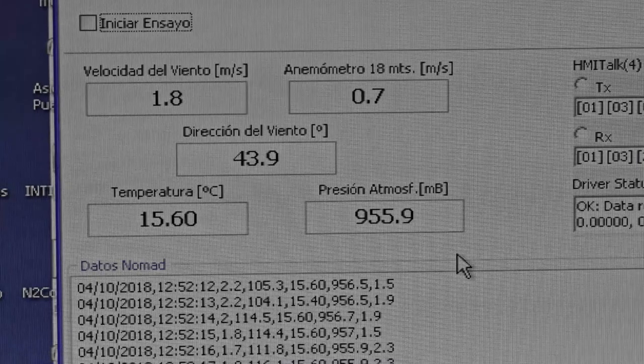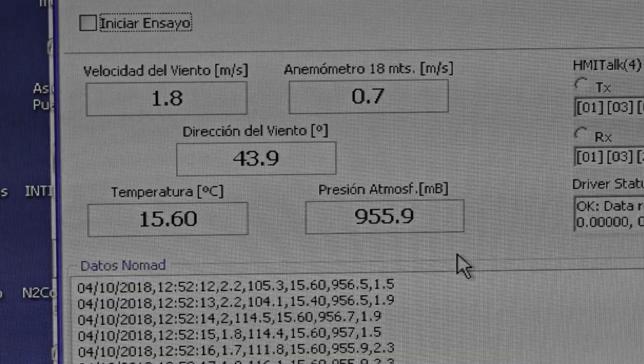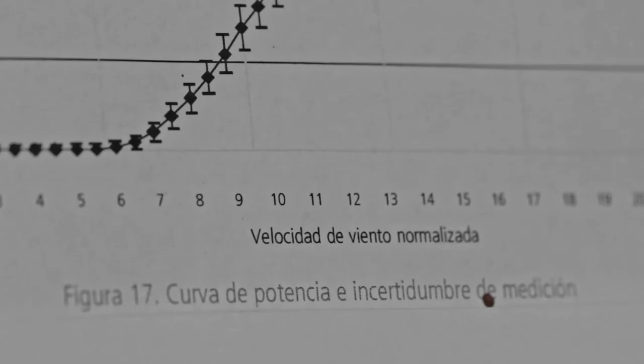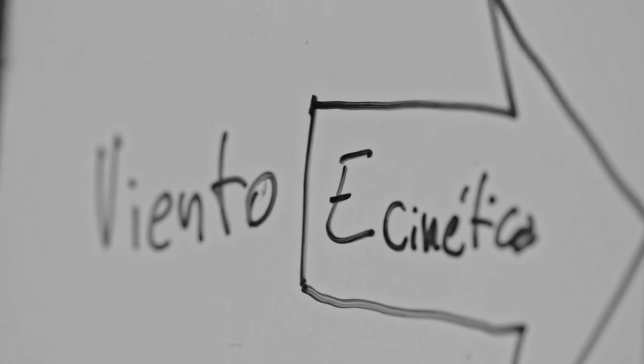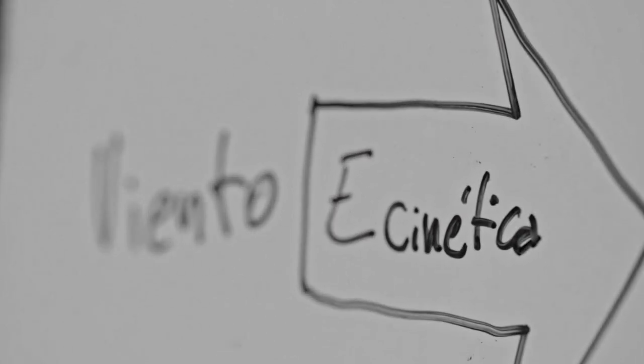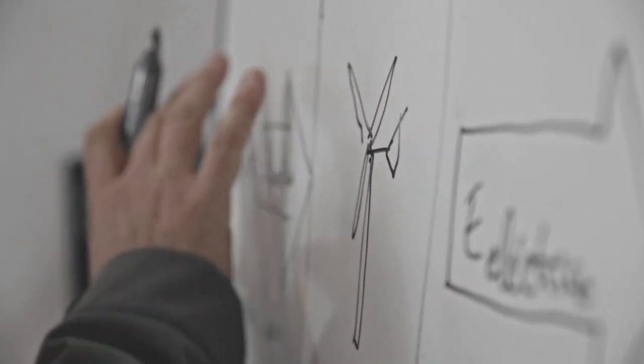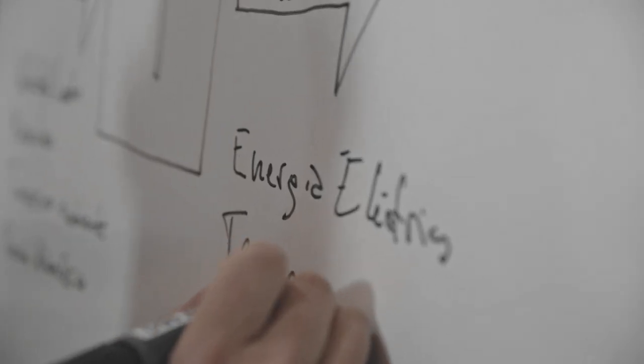Here we have the measurement equipment. What we do is register the pressure, direction of the wind, velocity, and temperature. These are the parameters that define the kinetic energy acting on the aerogenerator. On the other hand, we also measure the electrical energy output, which includes the current and electrical power.